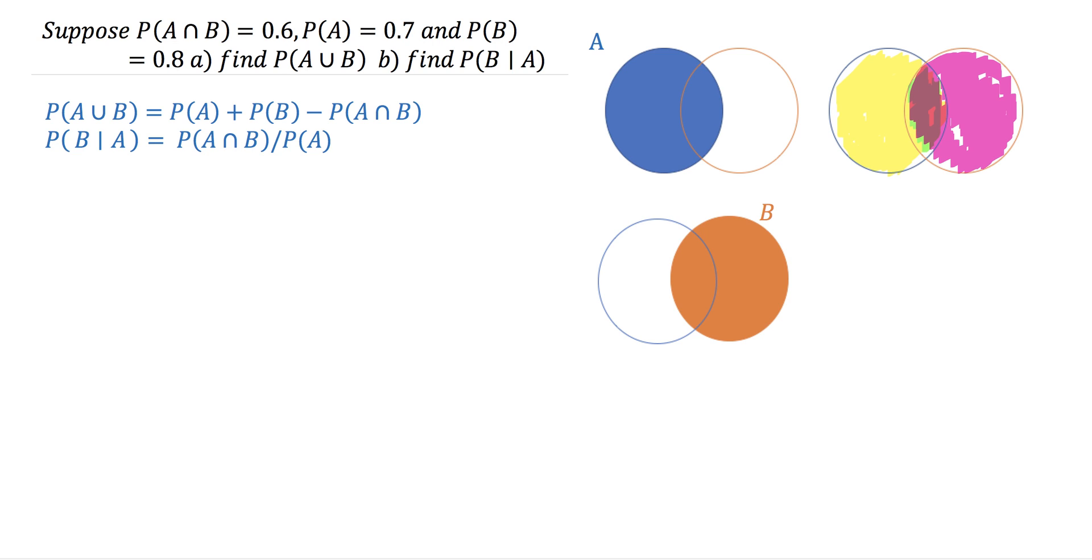So if we look over here at our first equation to solve for part A, we've got the probability of A plus the probability of B minus the probability of A intersect B. Because we've overlapped that middle intersecting section.